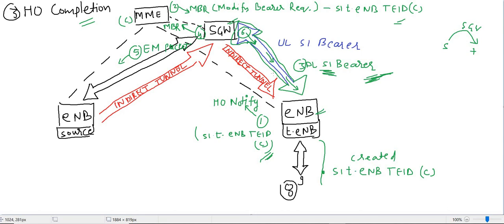That is step six: downlink packets are now directly forwarded to target eNB, no longer through the indirect tunnel. Step seven is the Handover Notify Acknowledge message, sent from MME to target eNB, confirming that the Handover Notify message has been acknowledged and everything is proceeding as required.